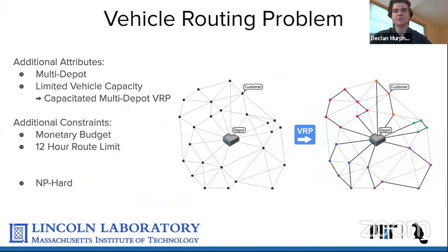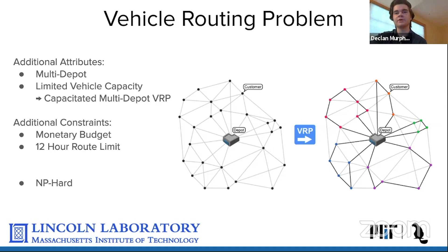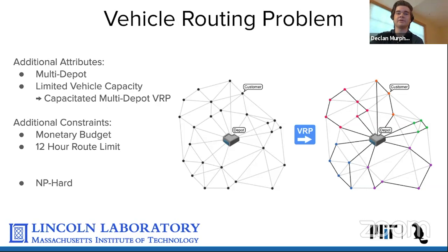The problem we have is called a vehicle routing problem — you have a base (depot), a fleet of vehicles, and different locations to supply, which in our case are shelters, hospitals, cell towers, and emergency services. We need to find optimal routes for the vehicles to reach all locations within 48 hours. Our problem is a capacitated multi-depot vehicle routing problem: we have two bases instead of one, and vehicles have a specific capacity. Additional constraints include keeping cost within budget and limiting a single path to no longer than 12 hours. This is an NP-hard problem, meaning an exact solution can't be solved in polynomial time.